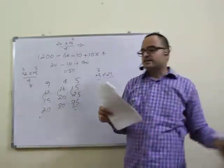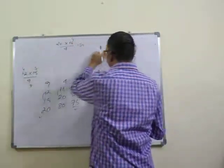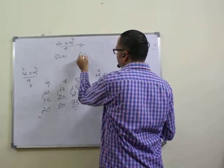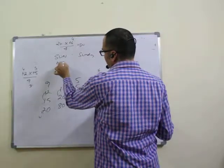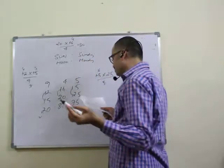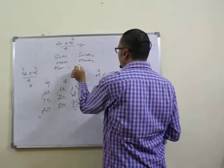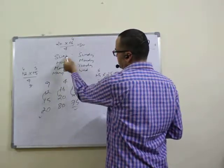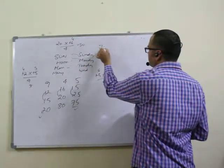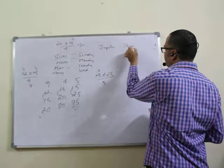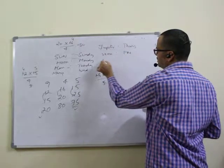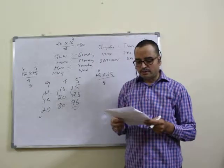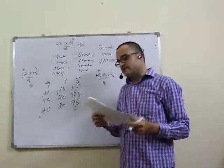Question nineteen: Sun is to Sunday; Mercury is to — ? In CGL, this type of question is common. Sun corresponds to Sunday; Moon to Monday; Mars to Tuesday; Mercury to Wednesday; Jupiter to Thursday; Venus to Friday; Saturn to Saturday. So Mercury corresponds to Wednesday. Nineteenth question answer is first option.